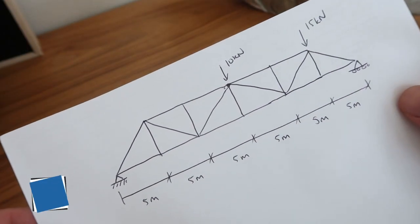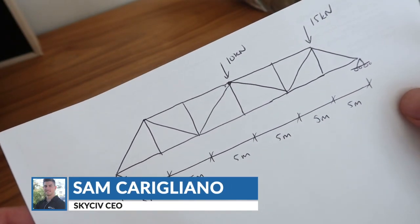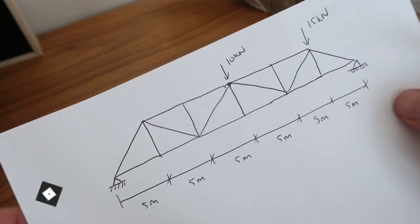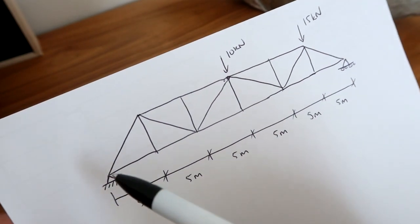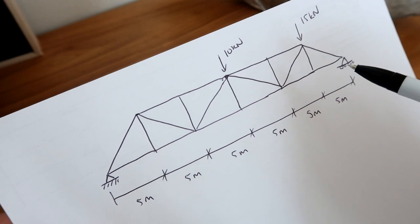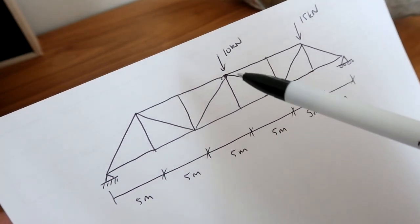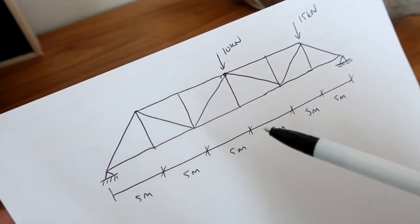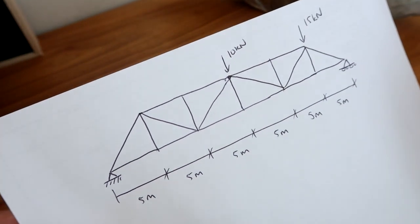Hi everyone and welcome to this tutorial on how to calculate internal member forces using the method of sections. Today we have a fairly simple example. We have two supports — a pin support and a roller support — as well as a 10 kN force at mid-span and a 15 kN force on the right side. Each of the bays spans 5 meters and the height of the truss is also 5 meters.